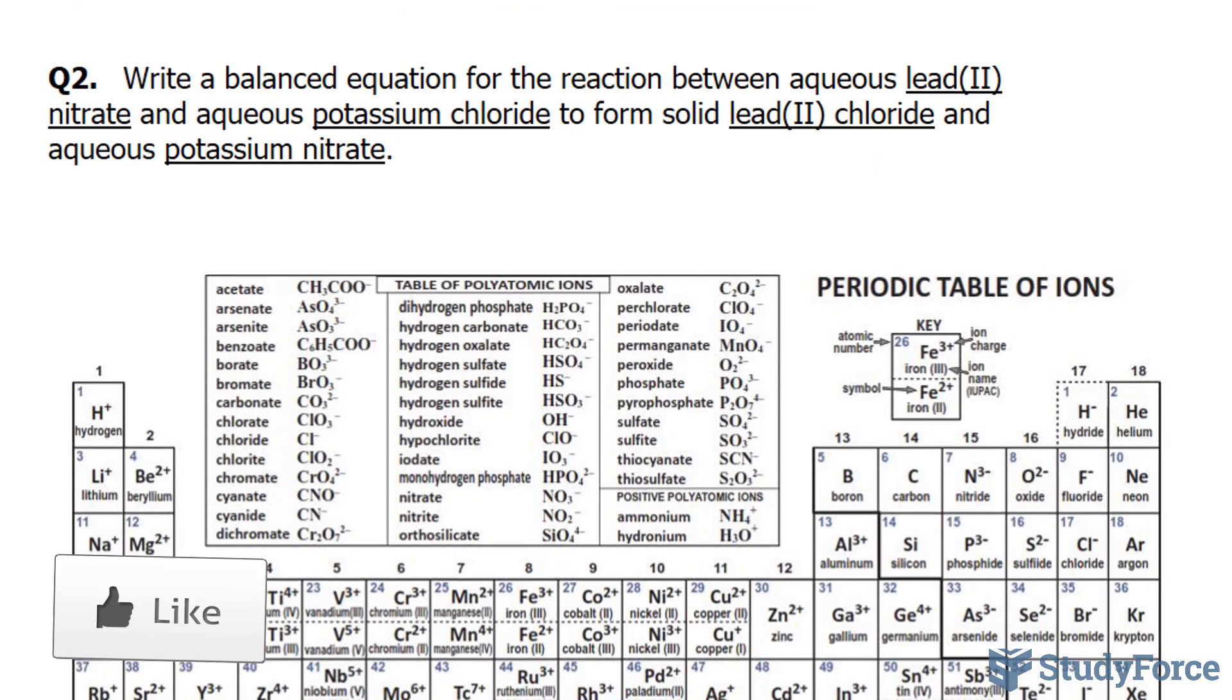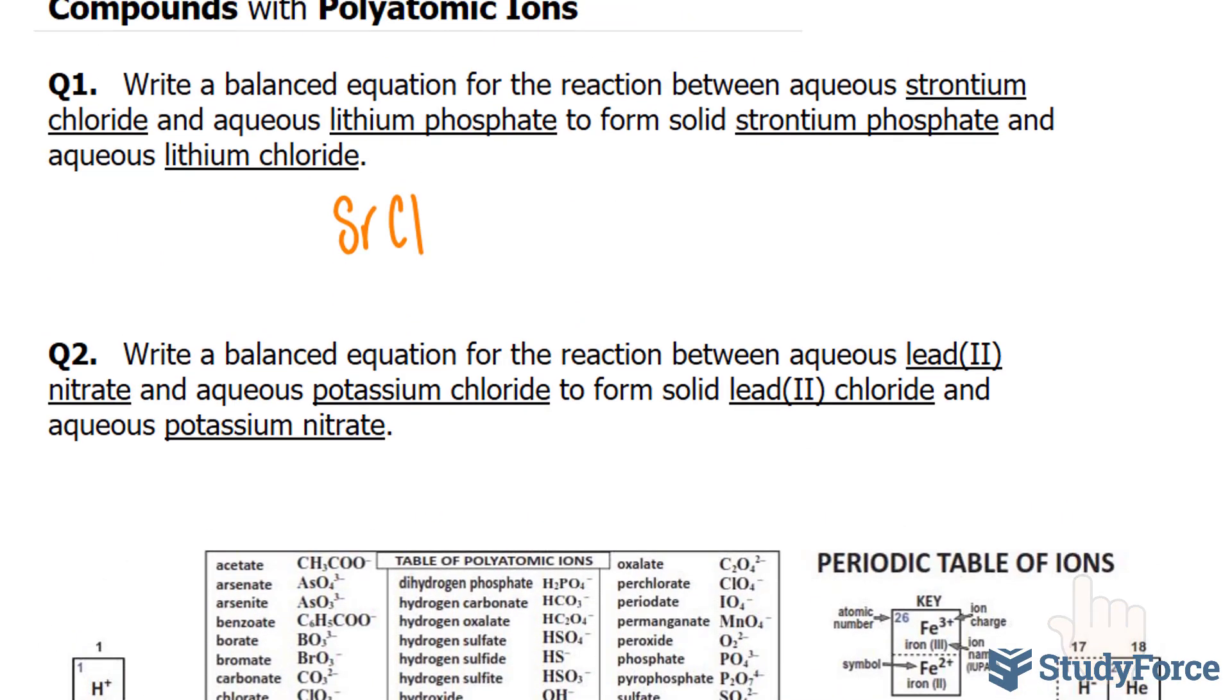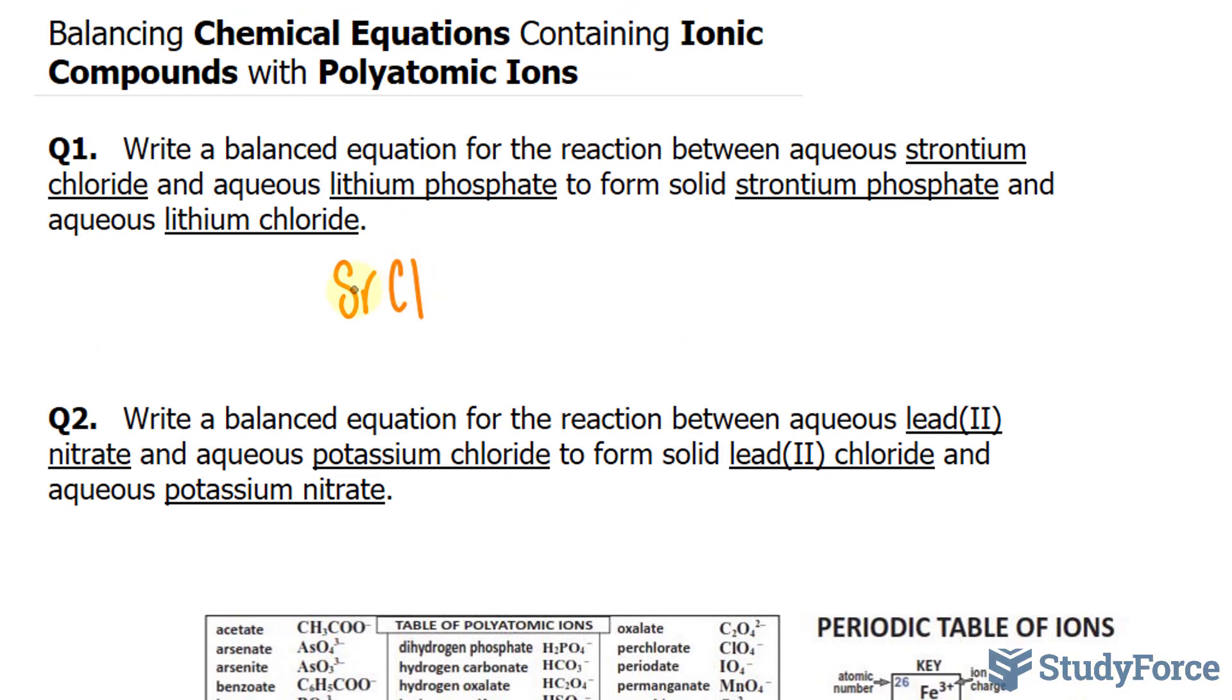Chlorine is found in the second last column and has a charge of 1 minus. So our final formula will be SrCl2.